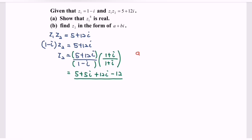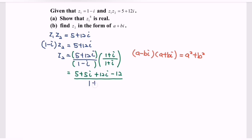In the denominator, we have the situation (a minus bi) multiplied by (a plus bi), which is multiplication between conjugates, giving us the formula a squared plus b squared. Here, a is equal to 1, so a squared gives us 1. And b is also equal to 1.